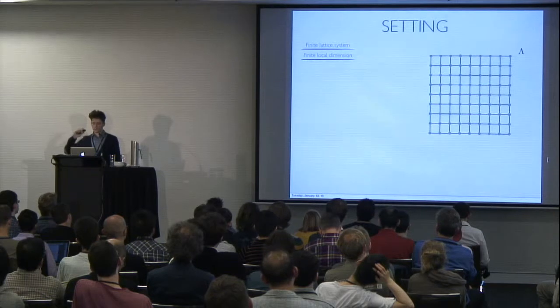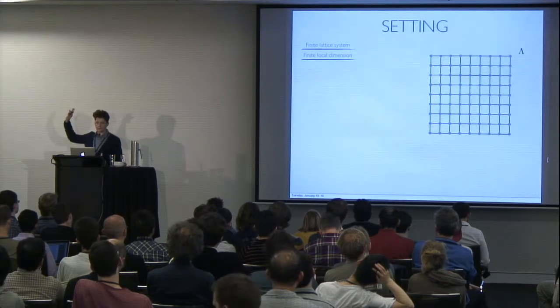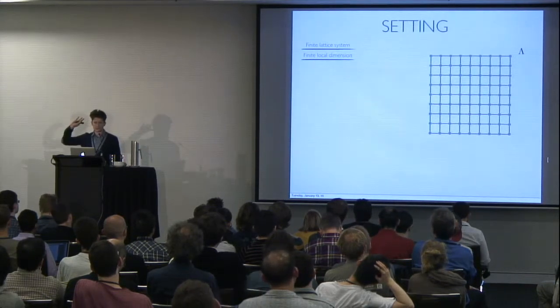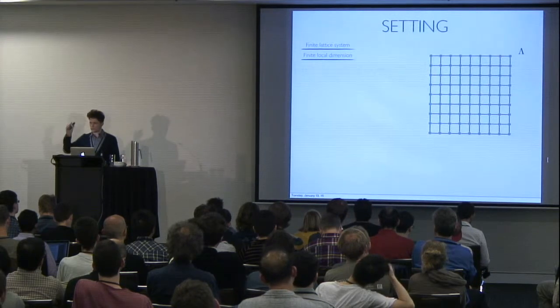And throughout, you probably want to think of classically the Ising model or quantum mechanically the Toric code, although these results hold much more generally.